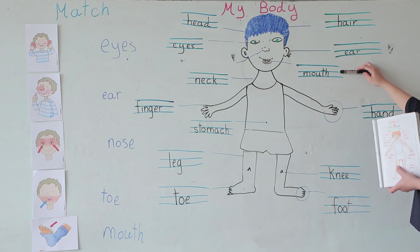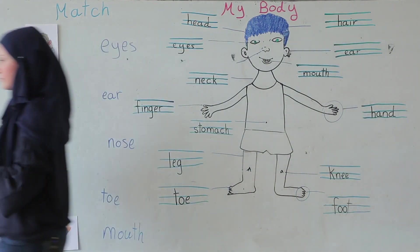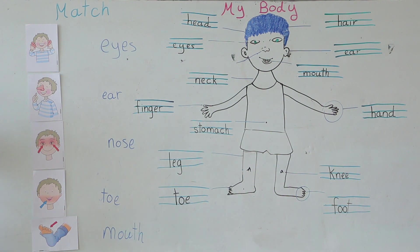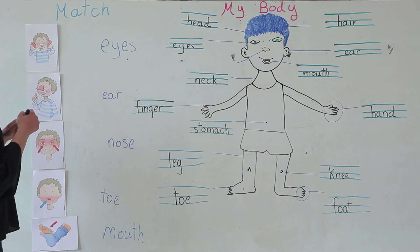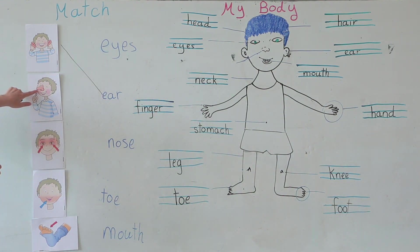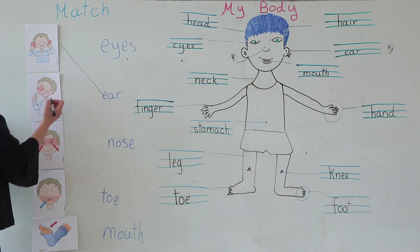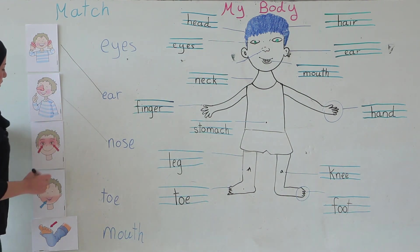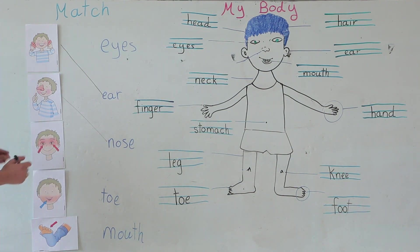Now let's match. What are these? Eyes, ear, nose, toe, or mouth? — Mouth. This one? Ear. — Ear. This one? Eyes, nose, toe, or mouth? — Nose. This one? Eyes, toe, or mouth? — Eyes.